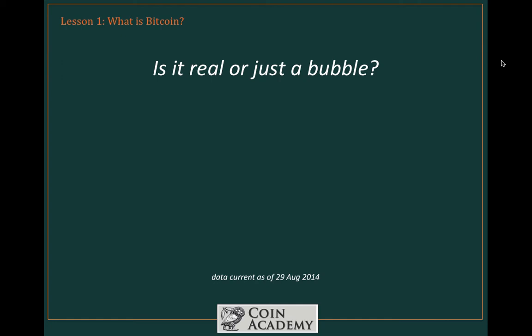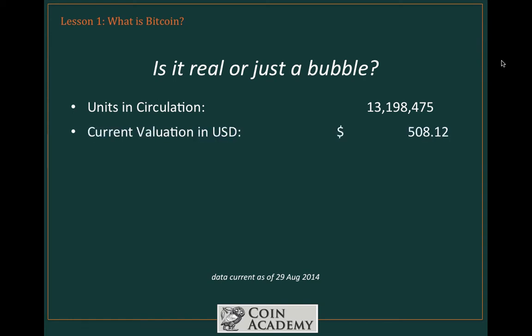One question we hear all the time is: is Bitcoin real or is it just a bubble? While everyone has their opinion, let's look at some numbers. At the time this was recorded, there were 13,198,475 Bitcoins in circulation. They're created every 10 minutes, so this will have changed by the time you watch this. The current valuation of a single Bitcoin in U.S. dollars was $508.12, meaning the total market cap for the Bitcoin money supply was $6.7 billion — a significant sum.